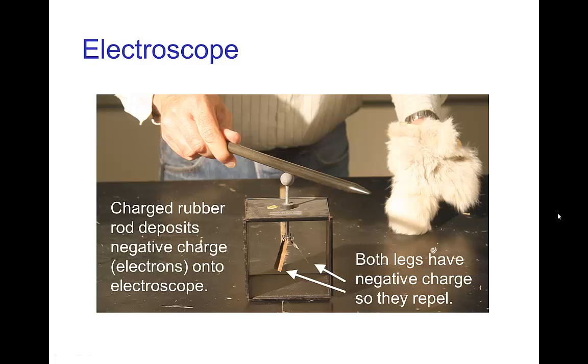So, as I said, the charged rubber rod deposits a negative charge in the form of electrons into the electroscope. So, the legs of the electroscope, because the metal top is connected to these metal legs, everything metal there becomes charged, and because everything has the like charges, they repel and the legs separate.